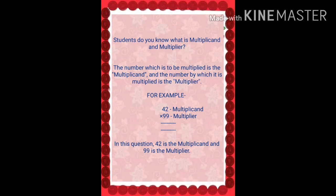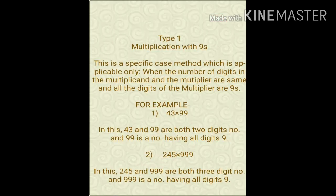Students, do you know what is multiplicand and multiplier? The number which is to be multiplied is the multiplicand, and the number by which it is multiplied is the multiplier. Type 1 multiplication with 9 is a specific case method which is applicable only when the number of digits in the multiplicand and the multiplier are same, and all the digits of the multiplier are 9.